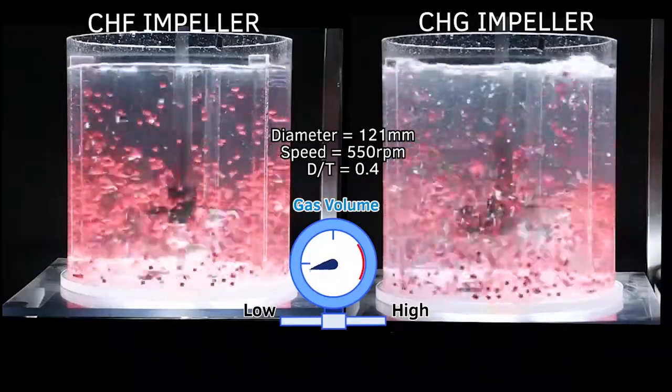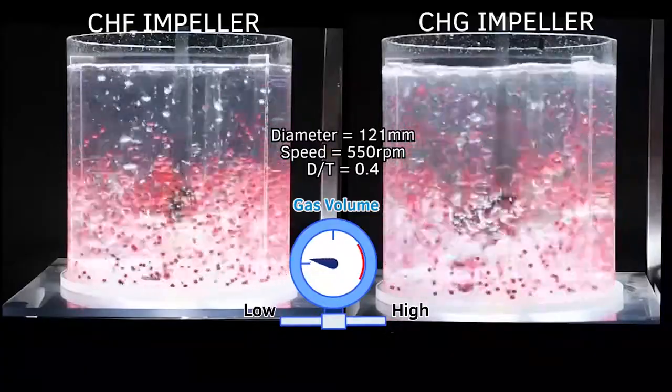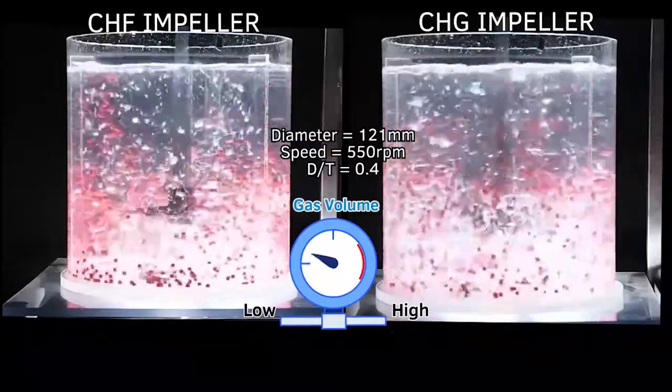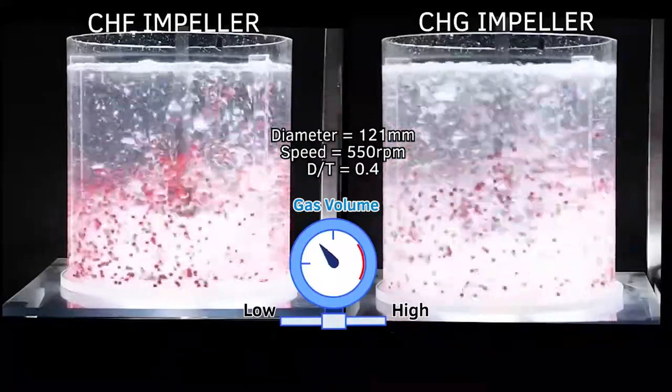When the gas volume is greater than the pumping volume of the impeller, that impeller will flood and as a result the solids will settle. One way to handle higher gas volumes in an agitated slurry tank if it is required, like a detox tank, would be to install a high solidity or broad blade impeller.